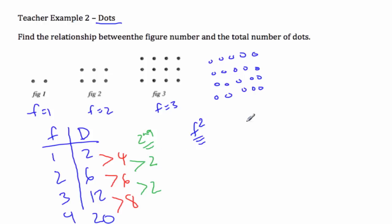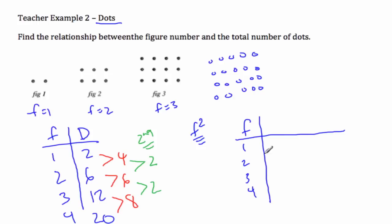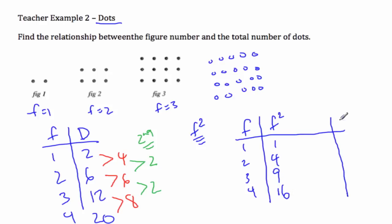So let's make a new table now. Here's f, and we'll go one, two, three, four. Let's also get f squared, since we know it's going to be an f squared situation. If I square one: one, four, nine, sixteen. And I have my dots over here, which is two, six, twelve, and twenty.